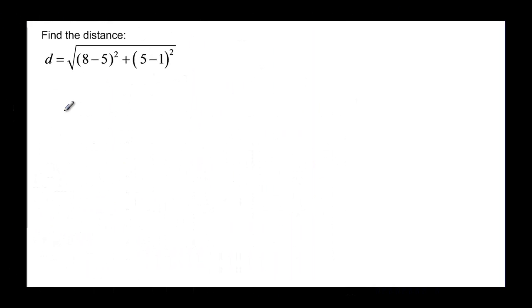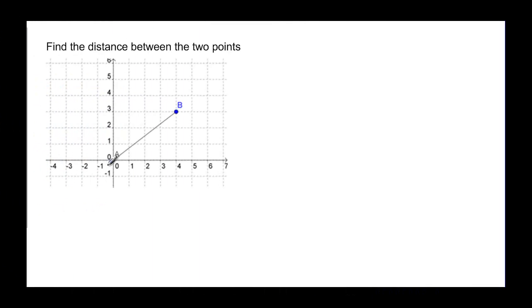Let's just practice simplifying. The square root of 8 minus 5 would be 3 squared plus 5 minus 1 would be 4 and then squared. The square root of 9 plus 16 that ends up being the square root of 25. So the distance is 5 from that formula. Now let's use some actual points.